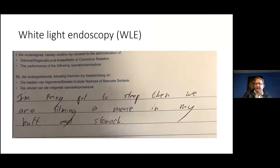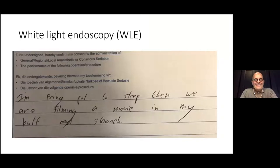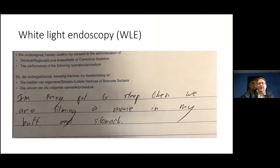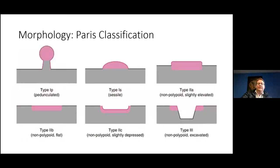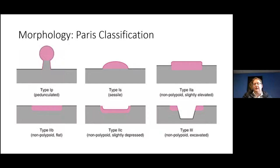Let's have a broad look at the diagnostic tools at our disposal. First up, white light endoscopy — what we're probably all fairly comfortable with. A patient wrote on his consent form that we're going to theater and they're going to be filming a movie up his butt and in his stomach, which I think perfectly sums up white light endoscopy. With white light endoscopy, you see a polyp, you can have a look at the morphology, and you can have a fairly educated idea of where in the colon this polyp is.